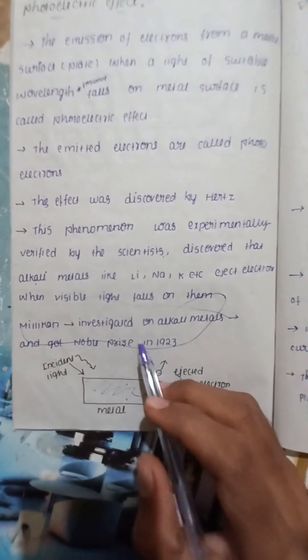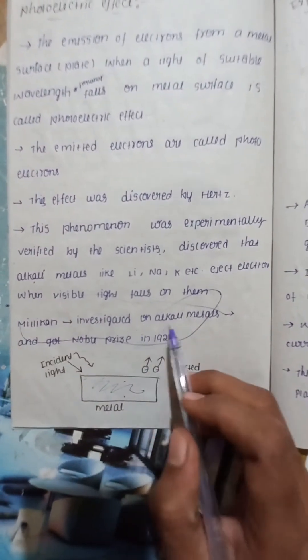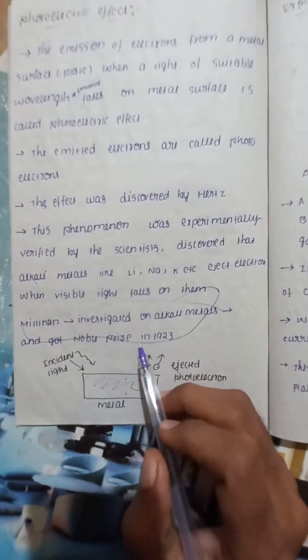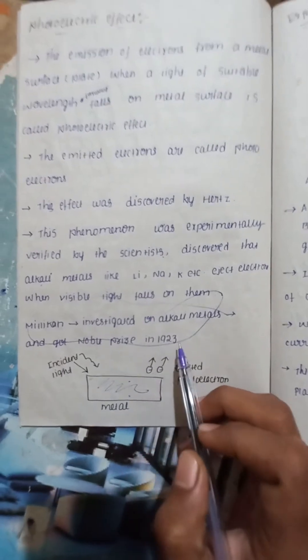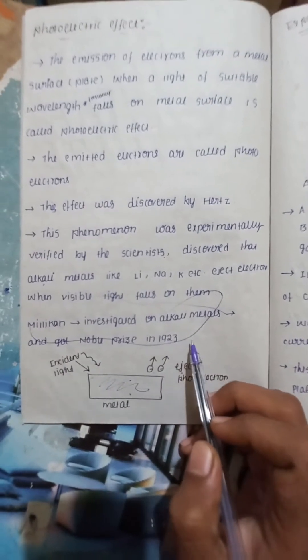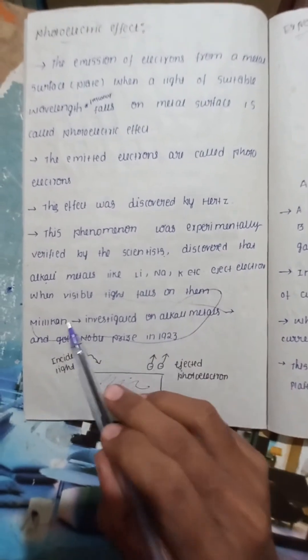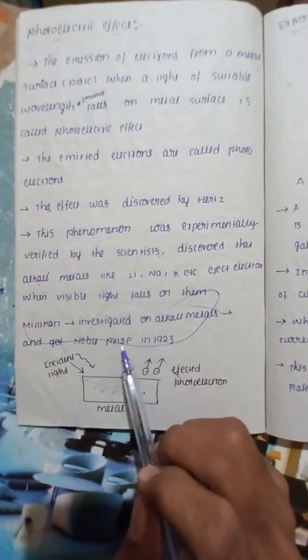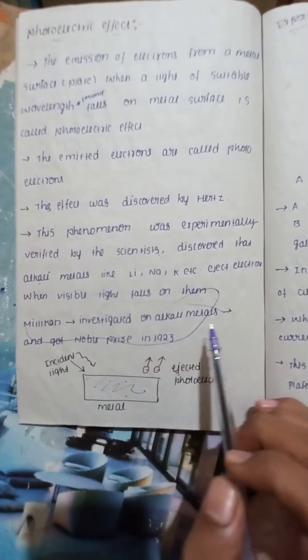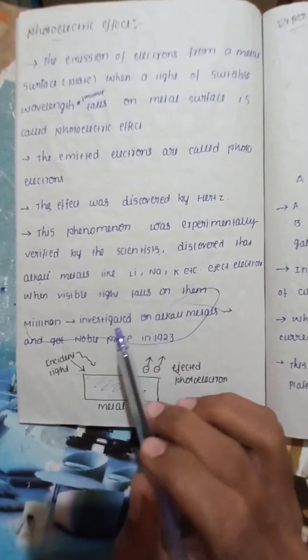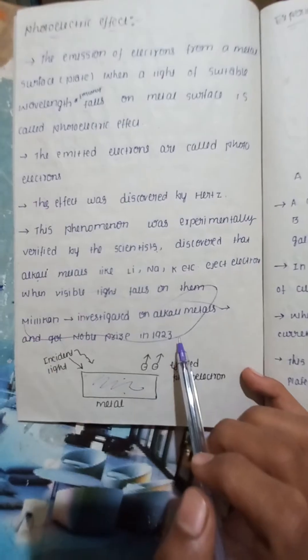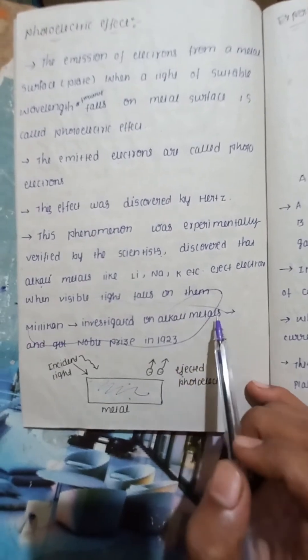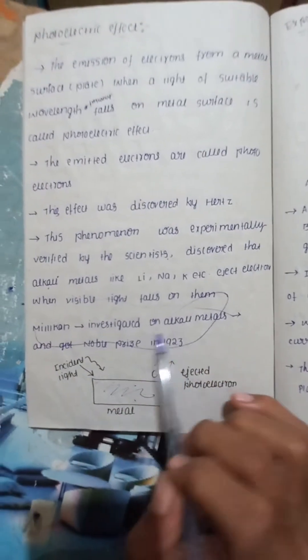Millikan investigated on alkali metals and got the Nobel Prize in 1923. This is an important point.